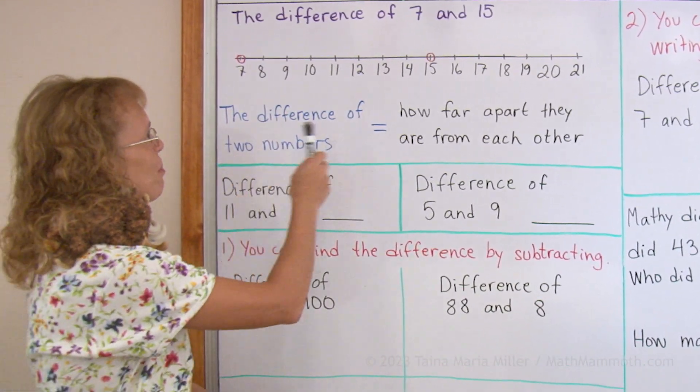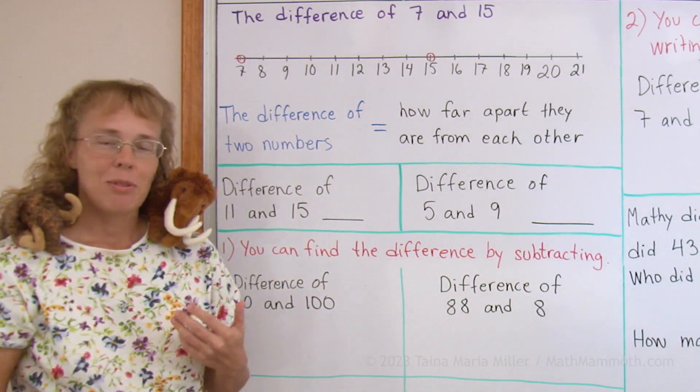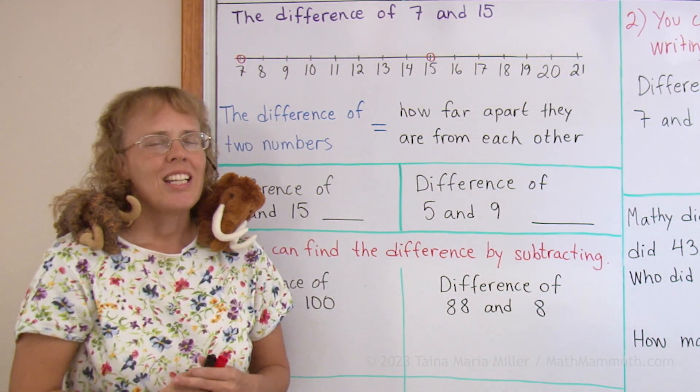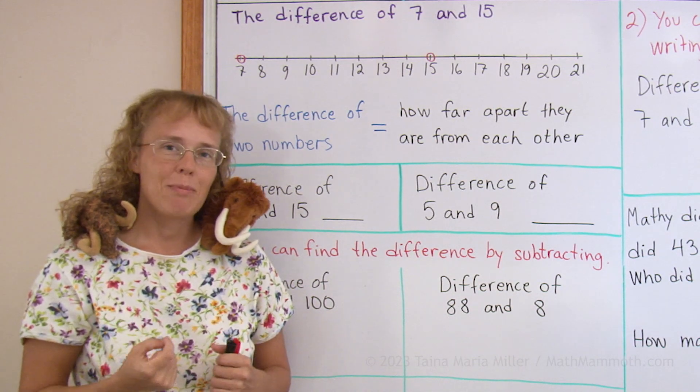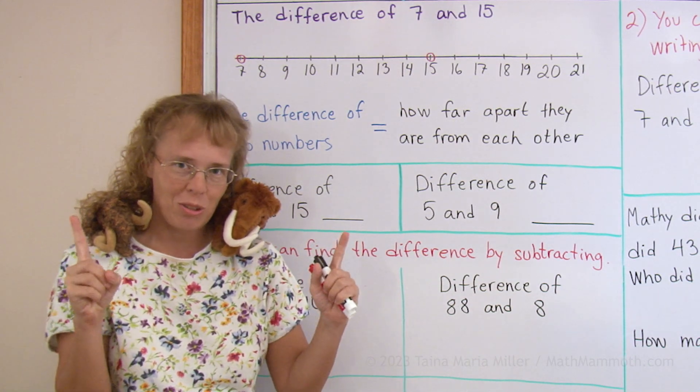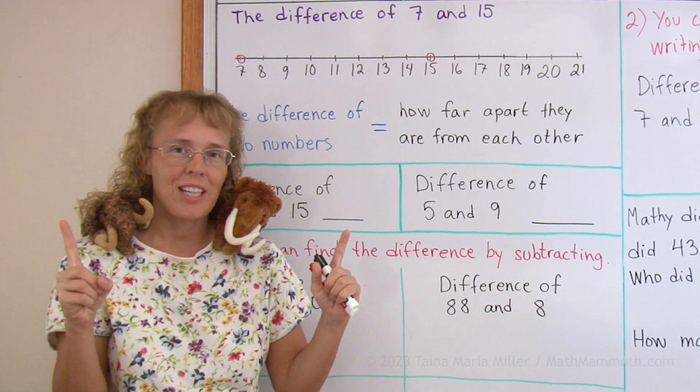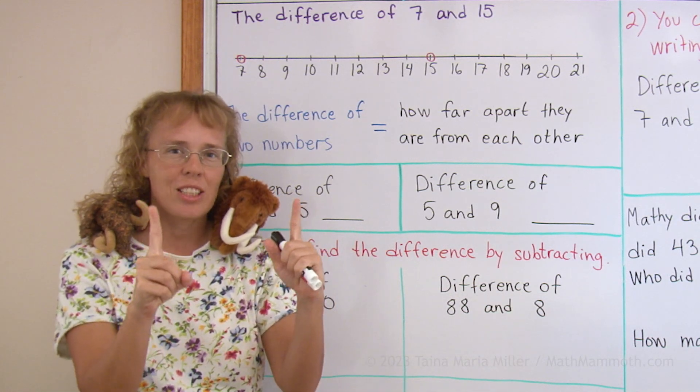Here I have a number line and we're going to solve the difference of 7 and 15. The difference of two numbers basically means how far apart those two numbers are on a number line. How much distance there is between two numbers.